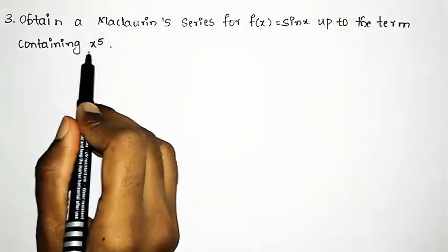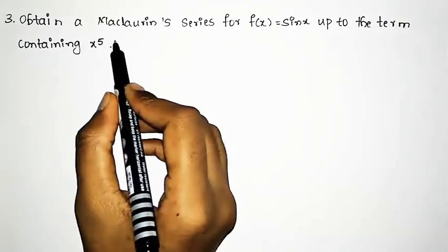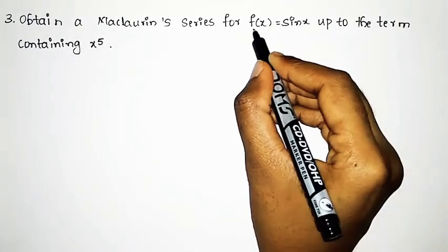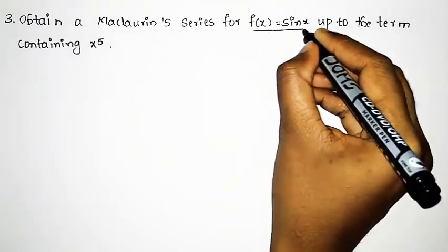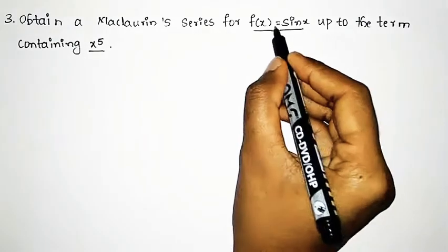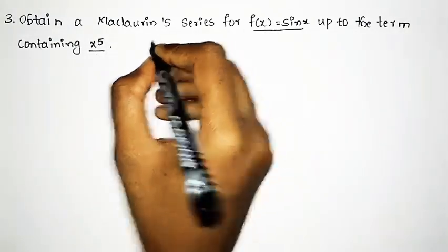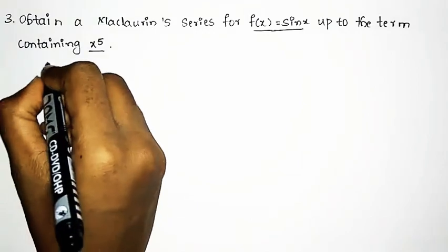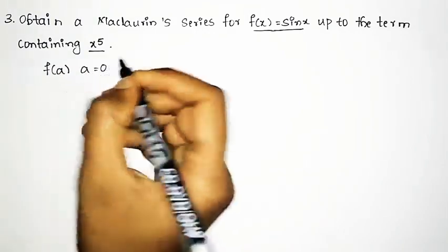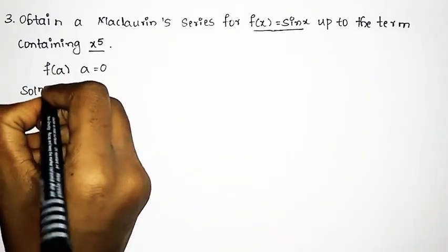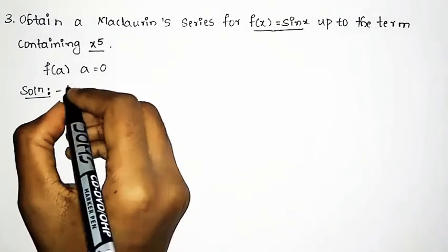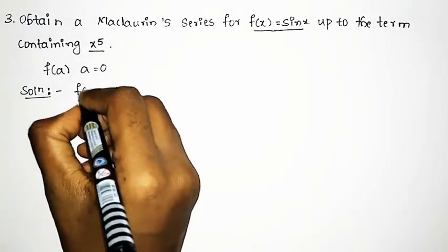up to the term containing x raised to 5. By observing this example, we are given the function f(x) = sin x up to the term x raised to 5. As we discussed, the Maclaurin series is where a = 0, so there are no x minus a terms.